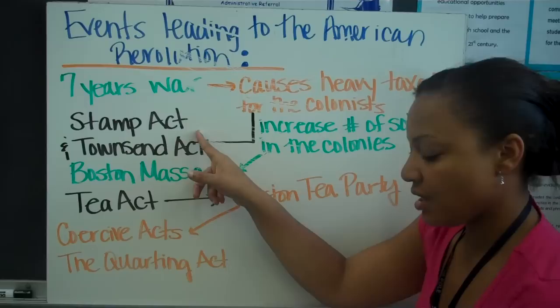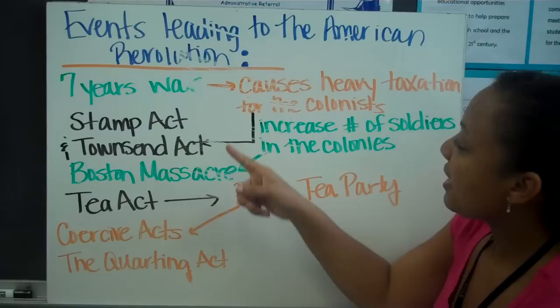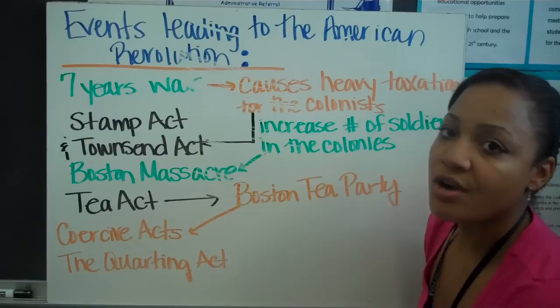The Stamp Act covered paper products such as newspapers, legal documents, licenses, and cards. So this war caused heavy taxation on the colonists. The first two taxes were the Stamp Act and the Townshend Act.